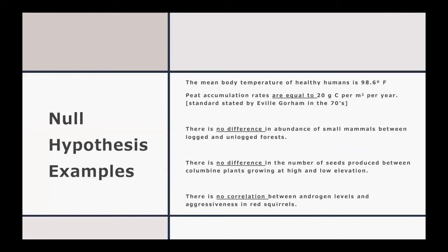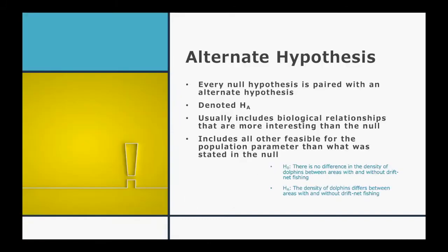Here are some examples of different null hypotheses. We might have a null hypothesis that says the mean body temperature of a healthy human is 98.6 degrees Fahrenheit. Or, a biogeochemist named Evel Gorham stated that peat accumulates in soils at 20 grams of carbon per meter squared per year regardless of ecosystem, so we might state as a null hypothesis that peat accumulation rates equal 20 grams of carbon per meter squared per year. We might also state that there is no difference in abundance of small mammals between logged and unlogged forests, no difference in seeds produced between columbine plants at high and low elevation, or no correlation between androgen levels and aggressiveness in red squirrels. Each of these null hypotheses would have a corresponding alternate hypothesis.